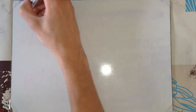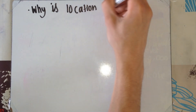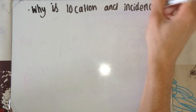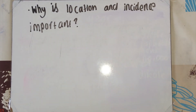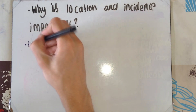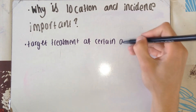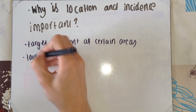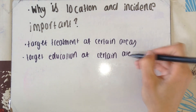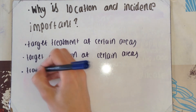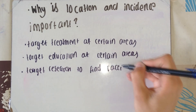A common exam question might give you a definition and ask why it relates to something else. For example, why is location and incidence rate important in finding out about a disease? This allows the government to target treatment at certain areas, target more education on specific diseases, and target research at specific diseases in finding cures.